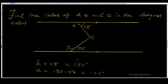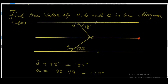To find angle c, we're going to draw another parallel line that runs through angle c. This auxiliary parallel line divides angle c into two parts. Let's call the upper part c1 and the lower part c2, so c1 plus c2 equals c.